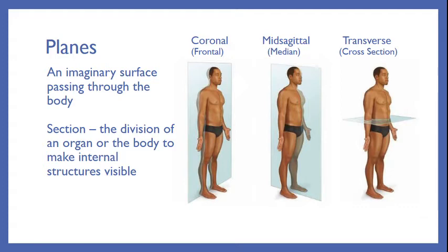The mid-sagittal plane creates a left and a right side. If it is mid-sagittal, it happens right on the middle of your body, in the line between your nose and your belly button. The transverse plane is a cross section — it can be anywhere from your head to your toe, as long as it divides the body into a top and bottom portion. All of these planes create sections, a division of an organ or the body to make internal structures visible.